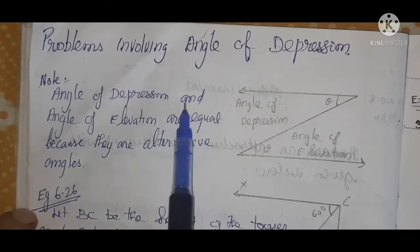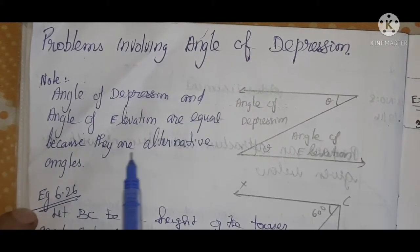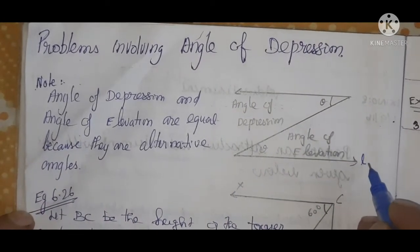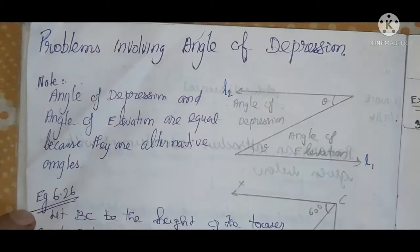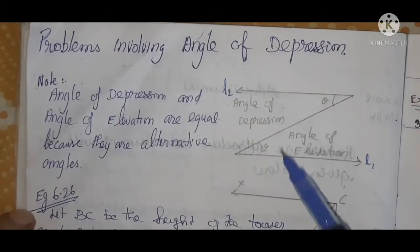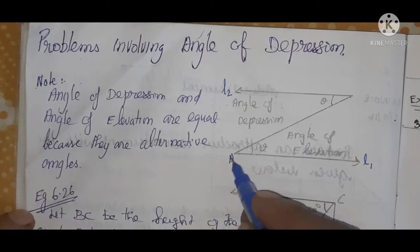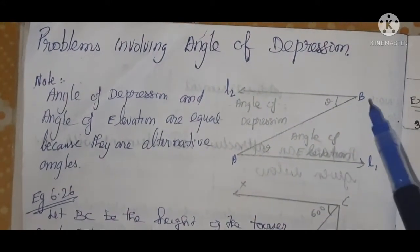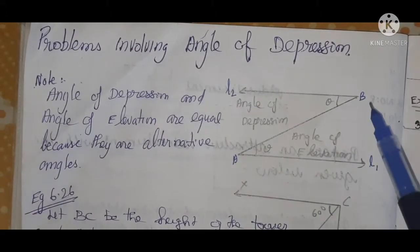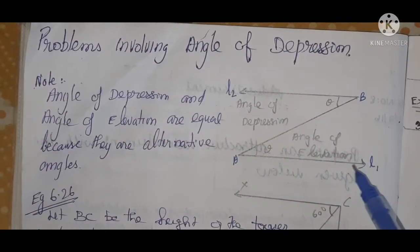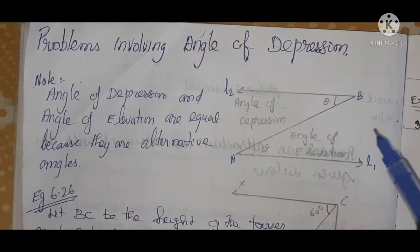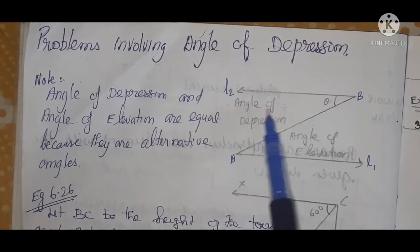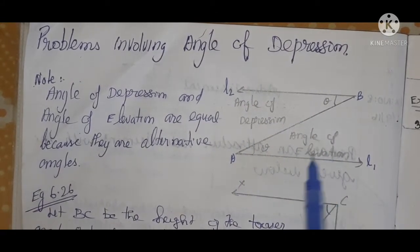The angle of depression and angle of elevation are equal because they are alternate angles. L1 and L2 are parallel lines, and AB is the transversal passing through L1 and L2. In a transversal, the alternate angles are equal, so the angle of depression is equal to the angle of elevation.